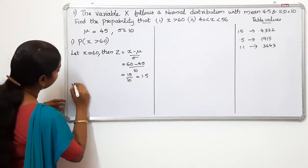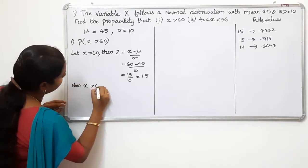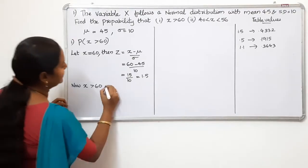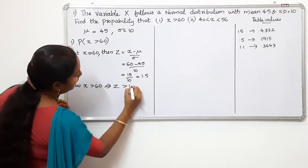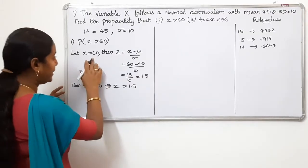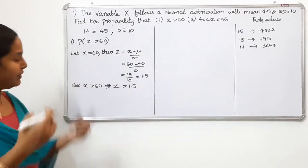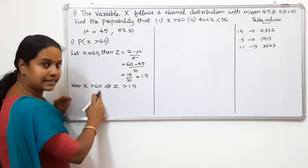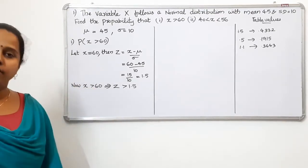So P of x greater than 60 becomes P of Z greater than 1.5, since when x equals 60, Z equals 1.5. Therefore x greater than 60 corresponds to Z greater than 1.5.